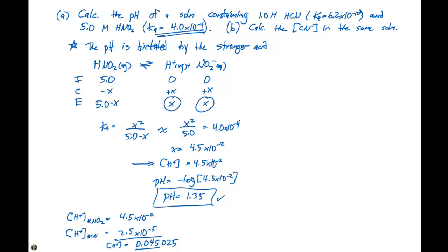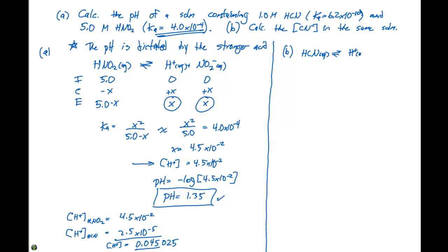That completes Part A with a pH of 1.35. Now let's address Part B, which asks us to calculate the CN minus concentration in the same solution. We need to set up the equilibrium expression for HCN, which gives H plus plus CN minus in aqueous solution.